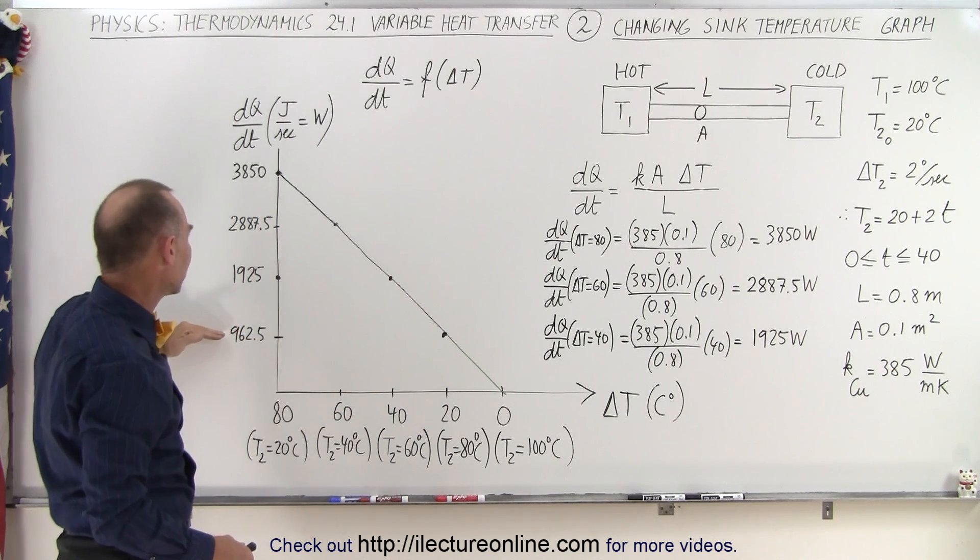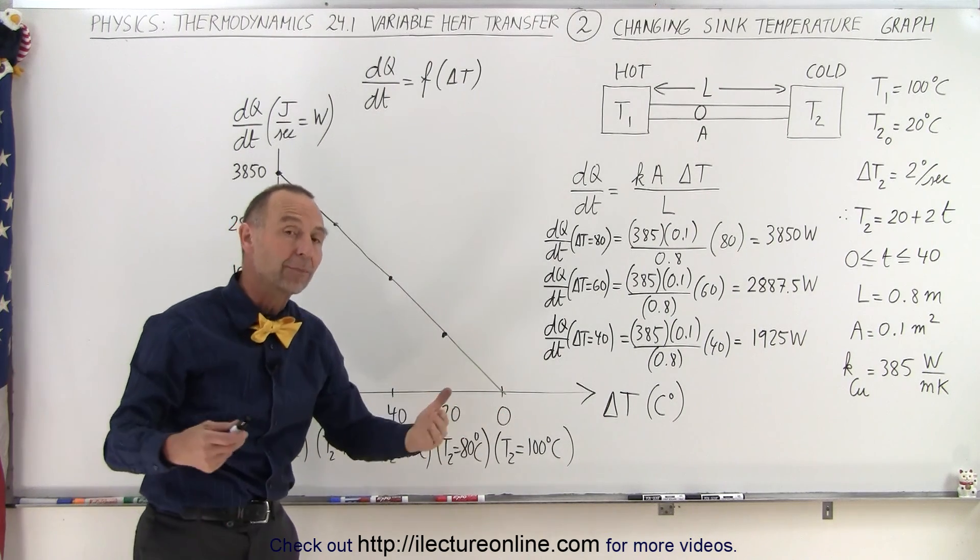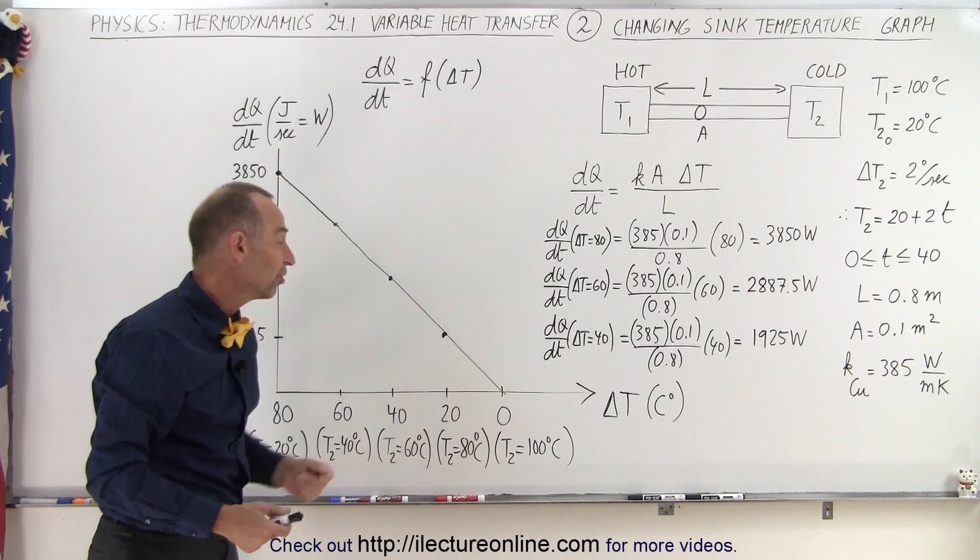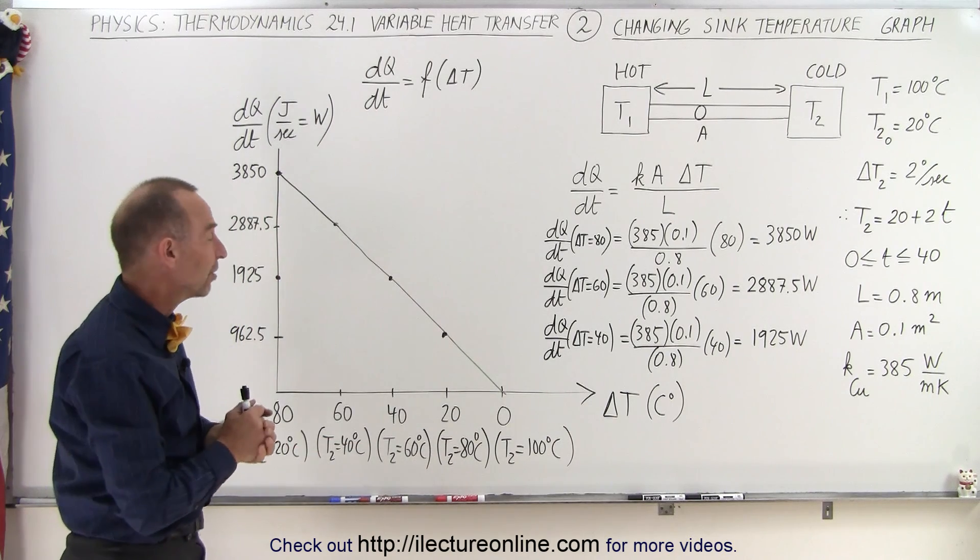At 20 degree difference, you're down to 962, and when the difference stops, when there's no difference, the difference is zero, then of course the heat conductivity stops as well, and no heat will transfer across the path.